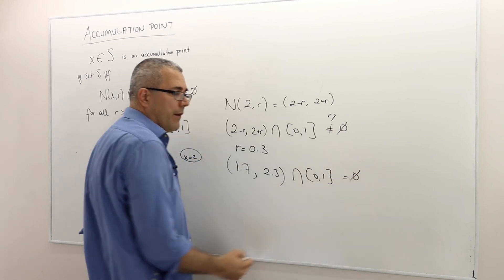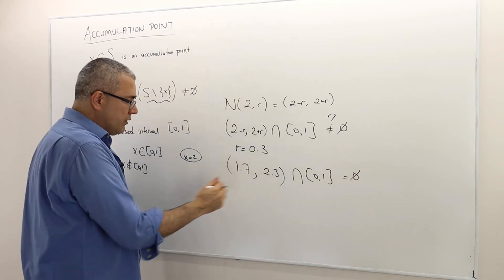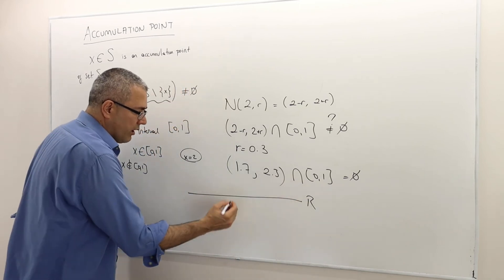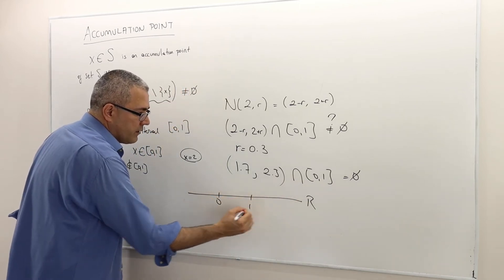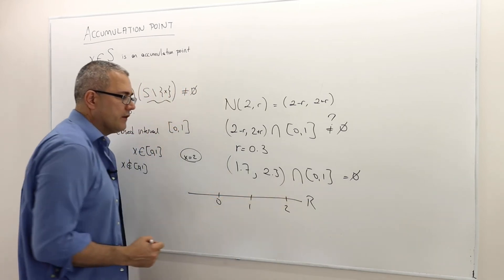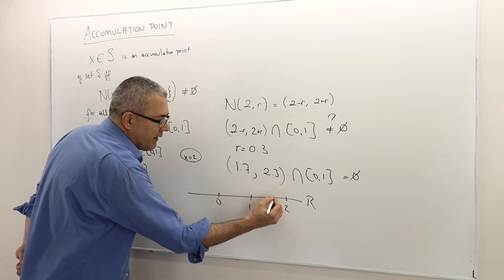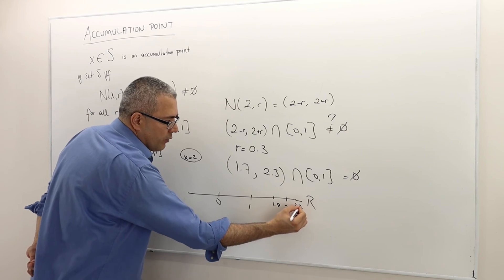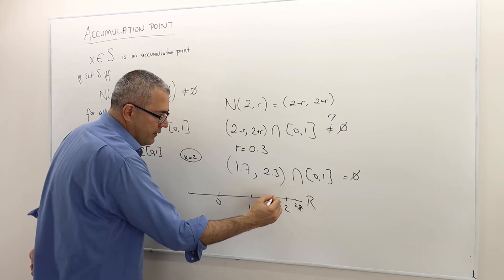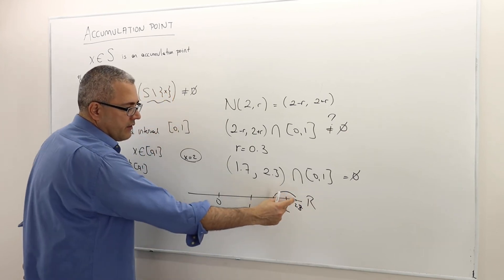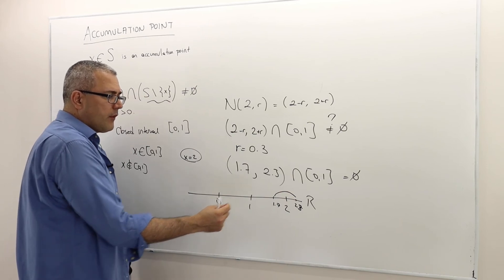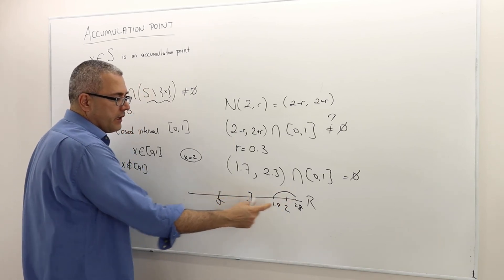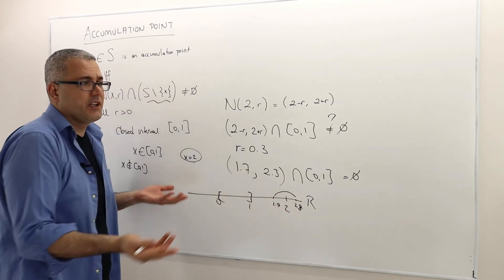If you can't visualize it, well, you can always draw the real line, right? So this is 0, this is 1, this is where 2 is. So 1.7 is here, let's suppose. 2.3 is here. So (1.7, 2.3) is this interval, open interval. And [0, 1] closed interval is here. And clearly the intersection is empty.